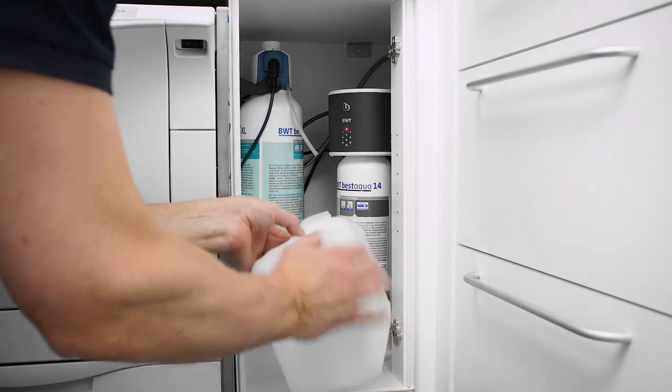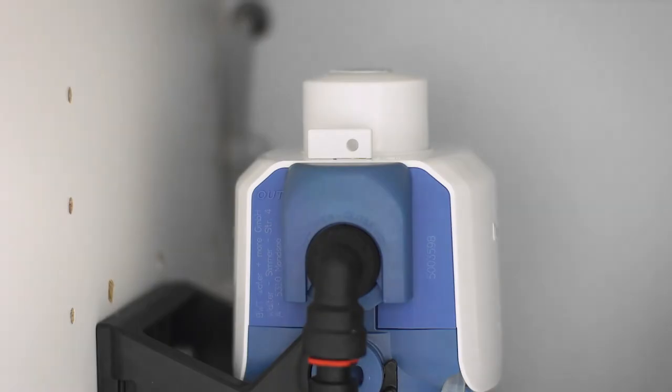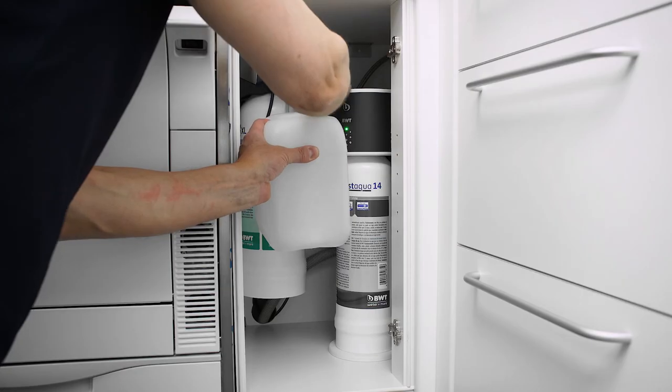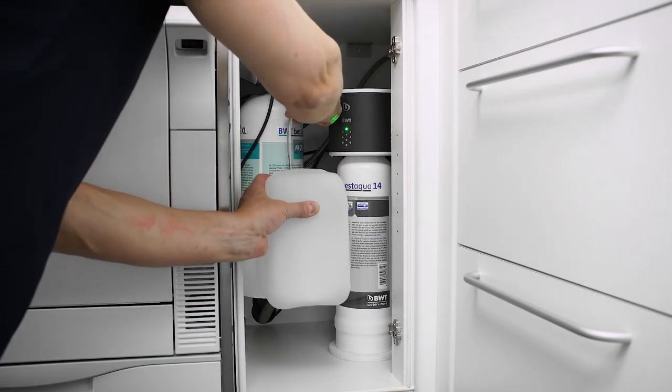Next, you need to vent the Best Ammon filter. Open the small flush valve which you will find on top of the white filter head. Be sure to have a small canister or bucket ready.